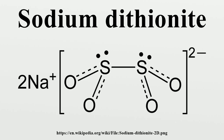Sodium dithionite is often used in physiology experiments as a means of lowering oxygen levels in solutions. It is also often used in soil chemistry experiments to determine the amount of iron that is not incorporated in primary silicate minerals. Hence, iron extracted by sodium dithionite is also referred to as free iron. The strong affinity of the dithionite ion for bi- and trivalent metal cations allows it to enhance the solubility of iron, and therefore dithionite is a useful chelating agent.